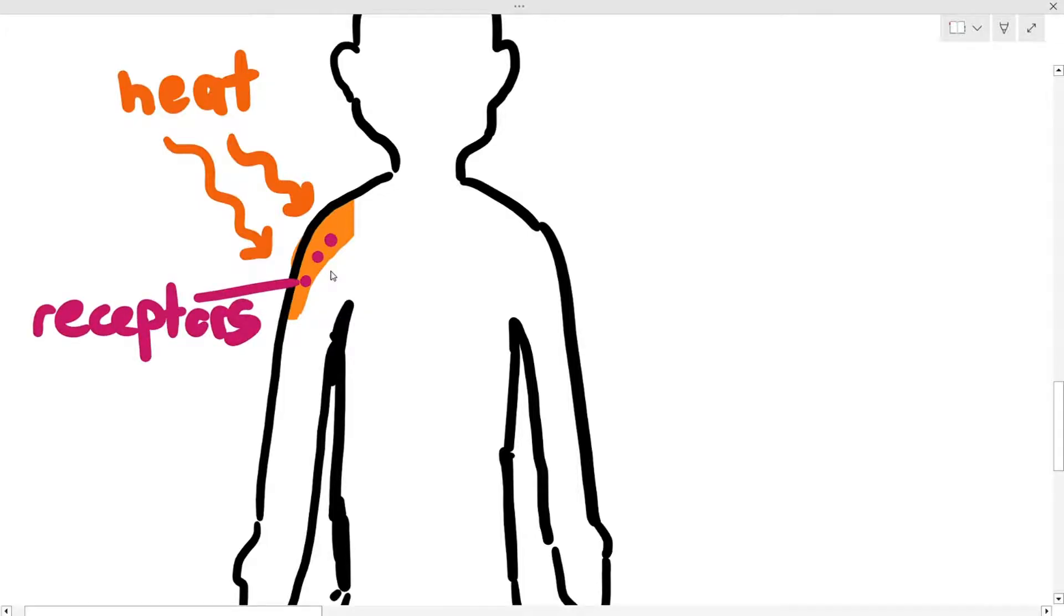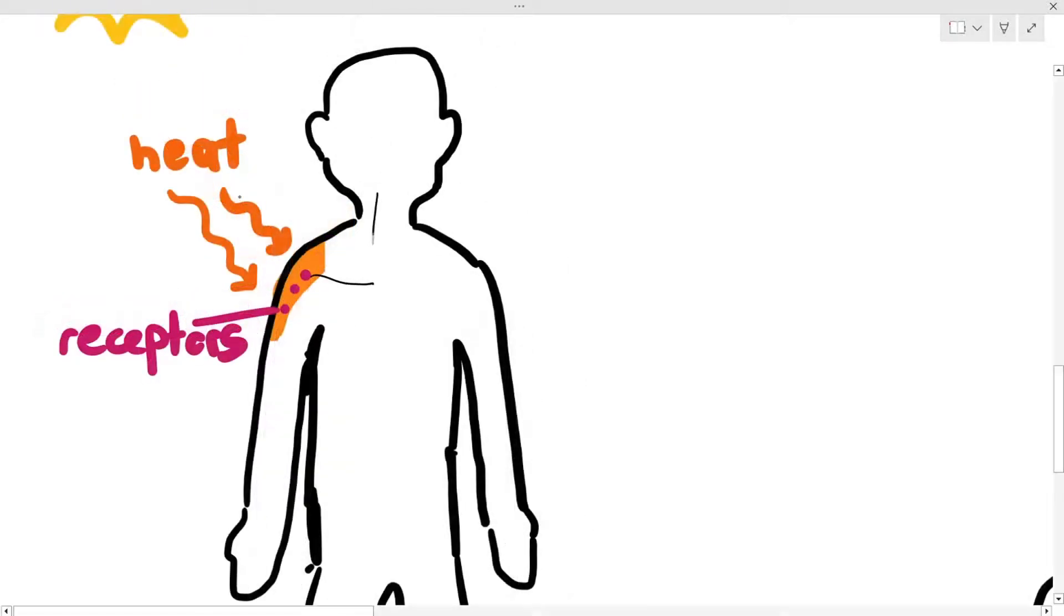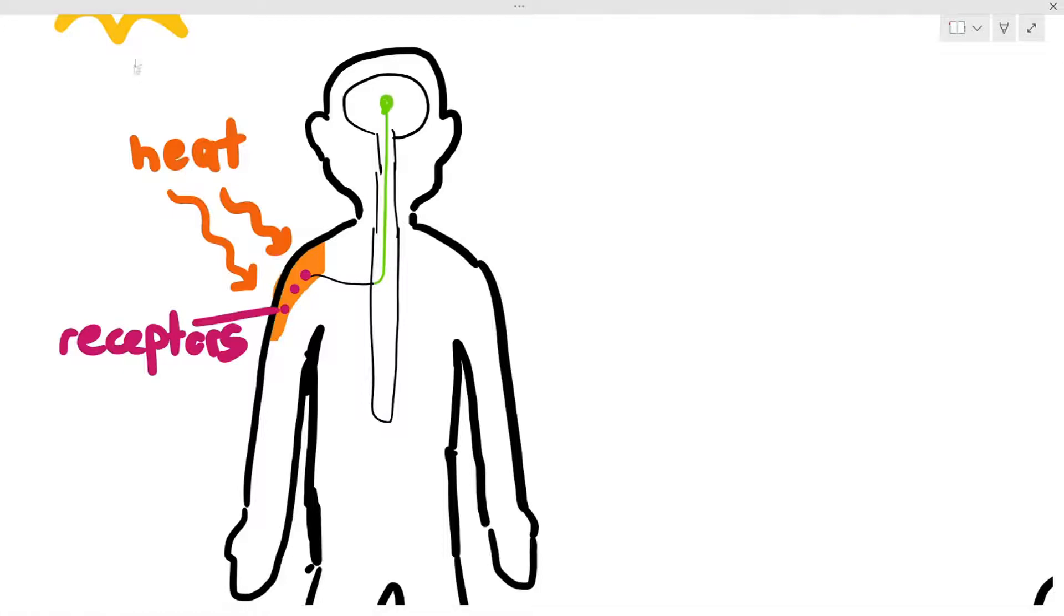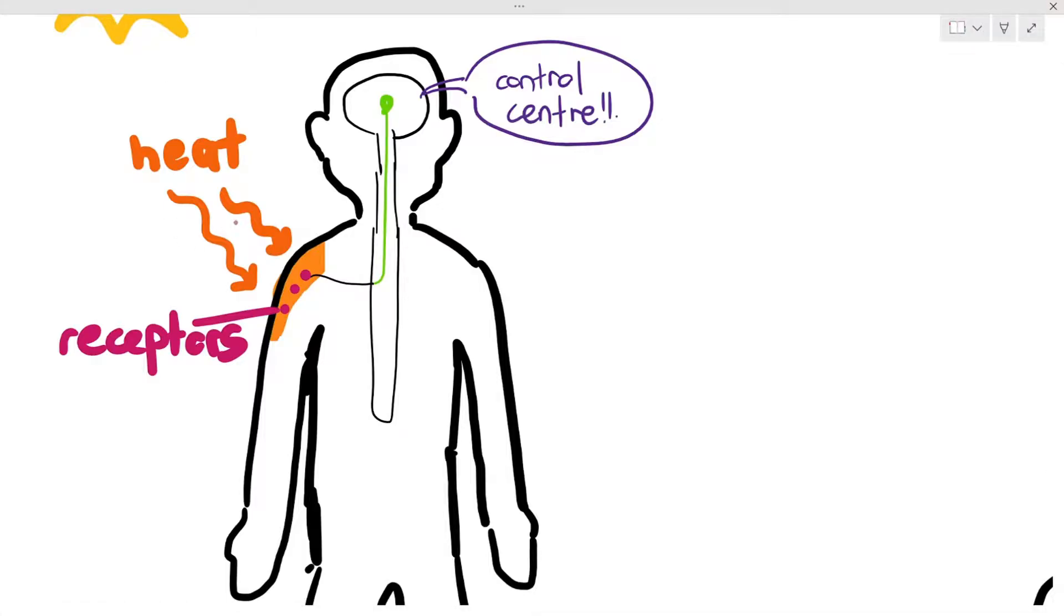So the receptors in this case, using a few steps, the signal from the receptors will be sent to the brain. Actually, it's sent to an organ known as the hypothalamus, but you don't need to memorize that. But what I'm just trying to tell you is the receptor sends a signal to the control center. So the control center is just the part of the body that receives the signal from the receptor and the control center goes, oh shit, the body temperature is increasing. We have to do something about this.